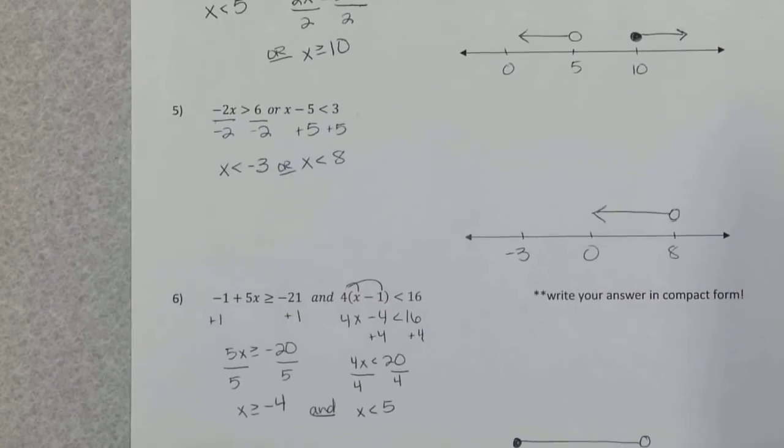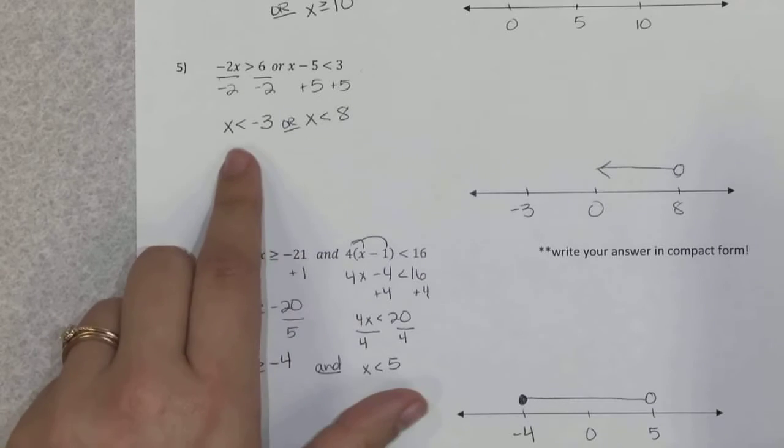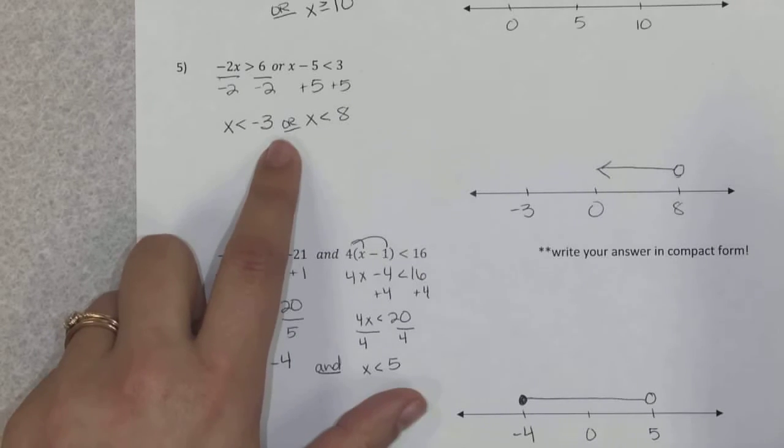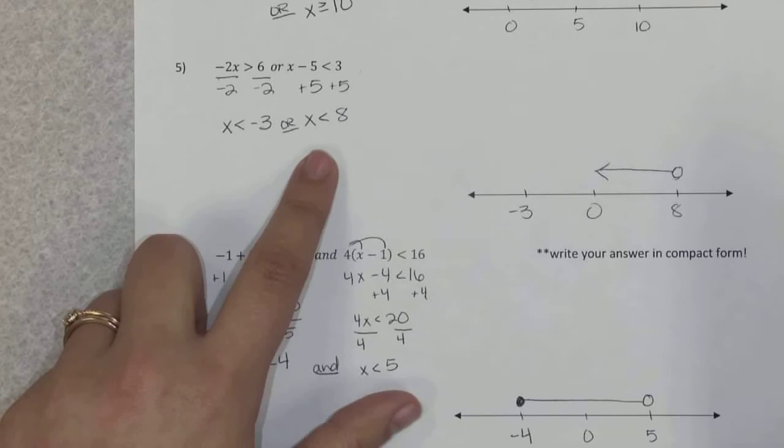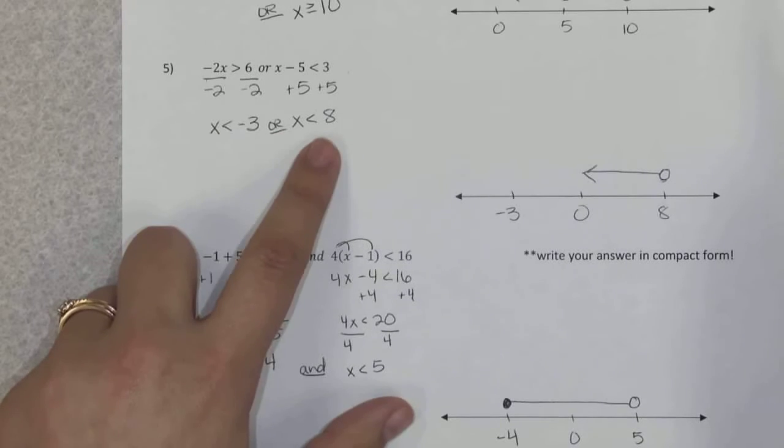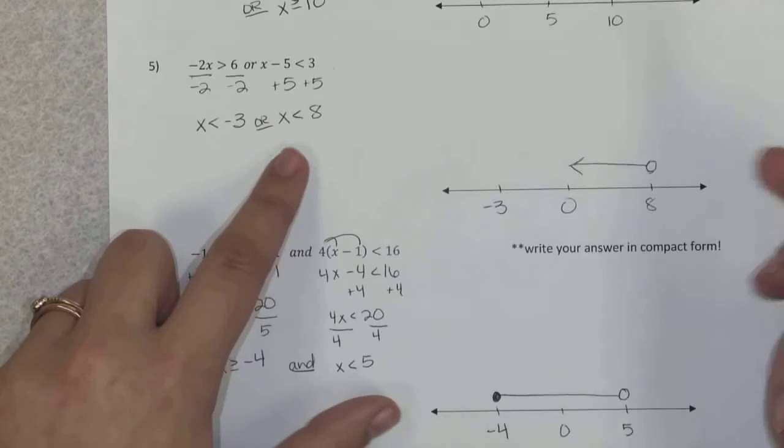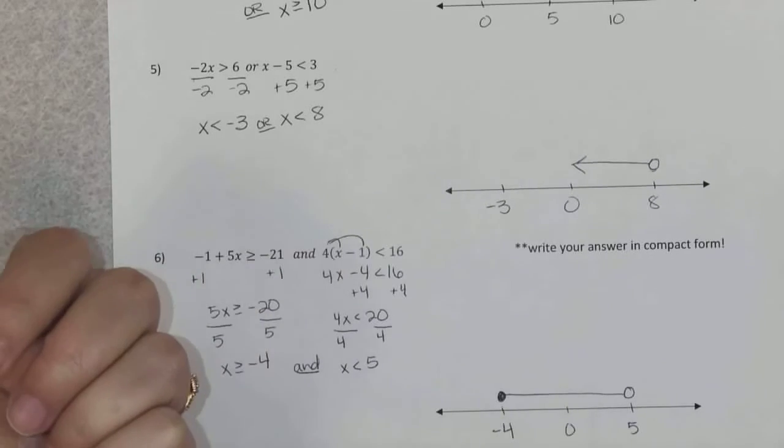Now the second one, number 5, when I solve my inequalities I get x is less than negative 3 or x is less than 8. Now this one's weird because it's going in the same direction—the signs are—and typically with an or inequality you're shading above one number and below the other.